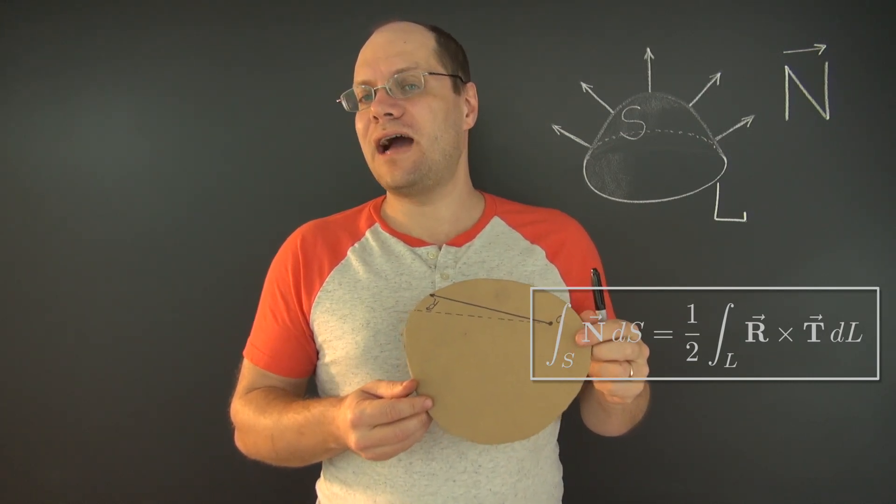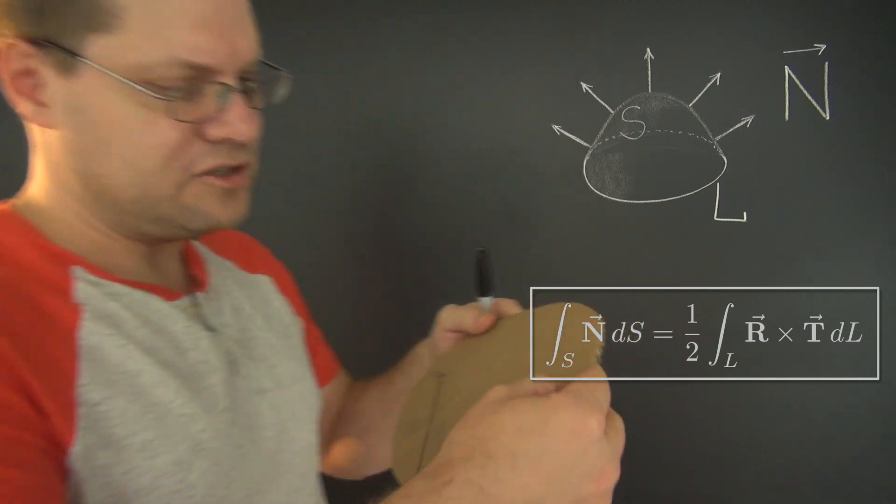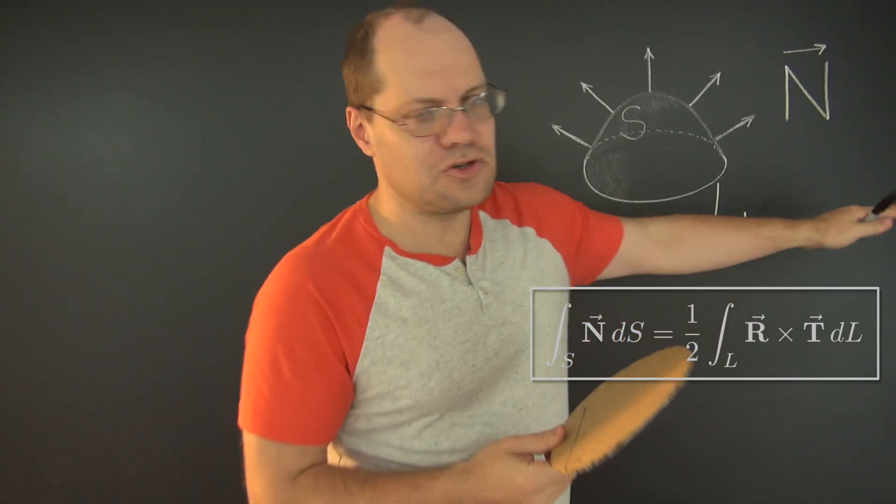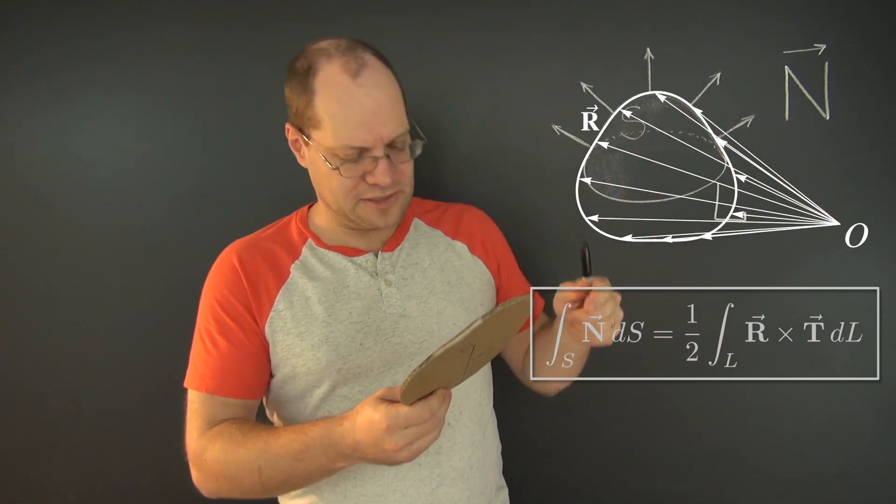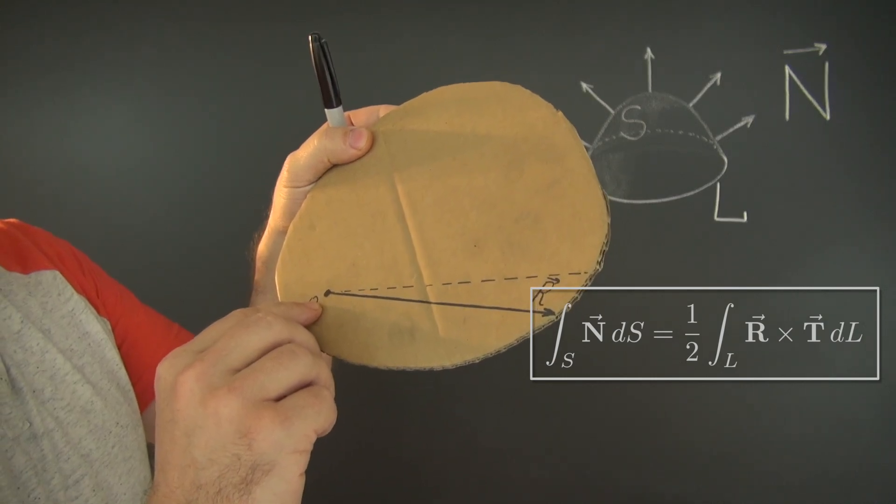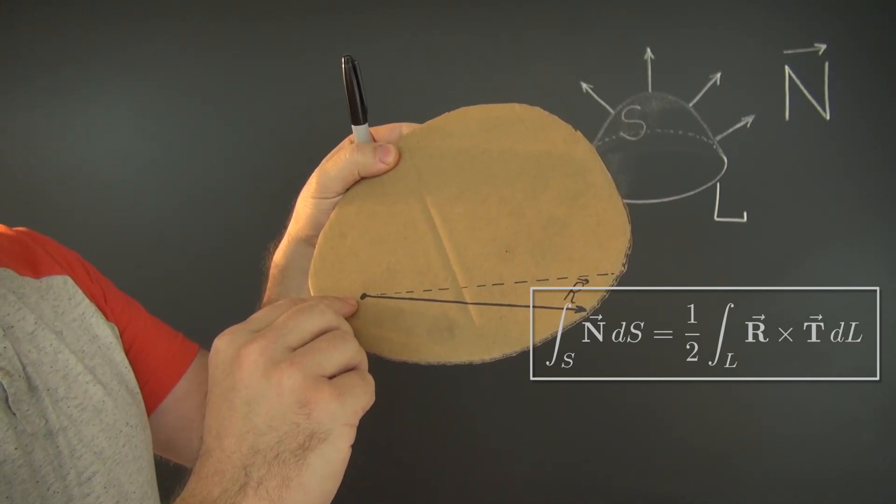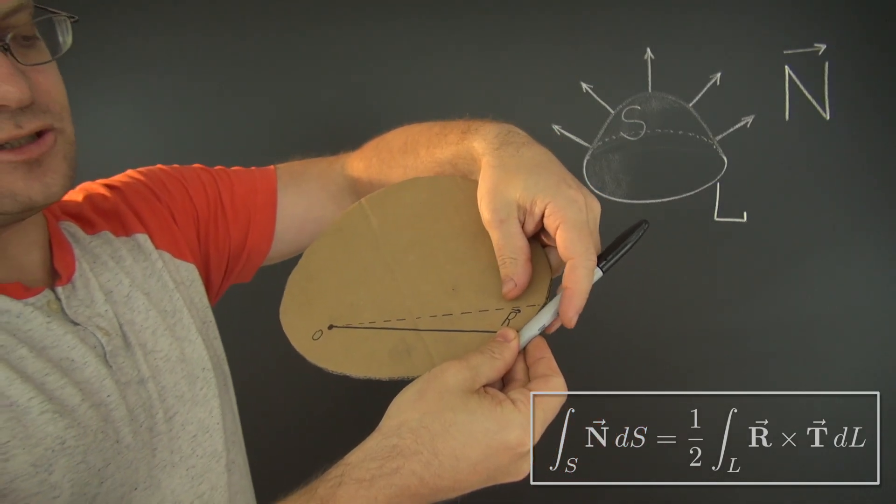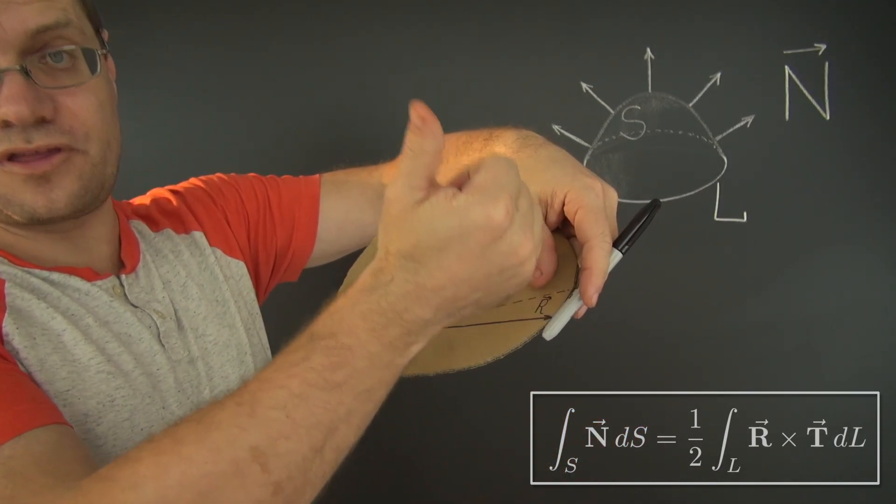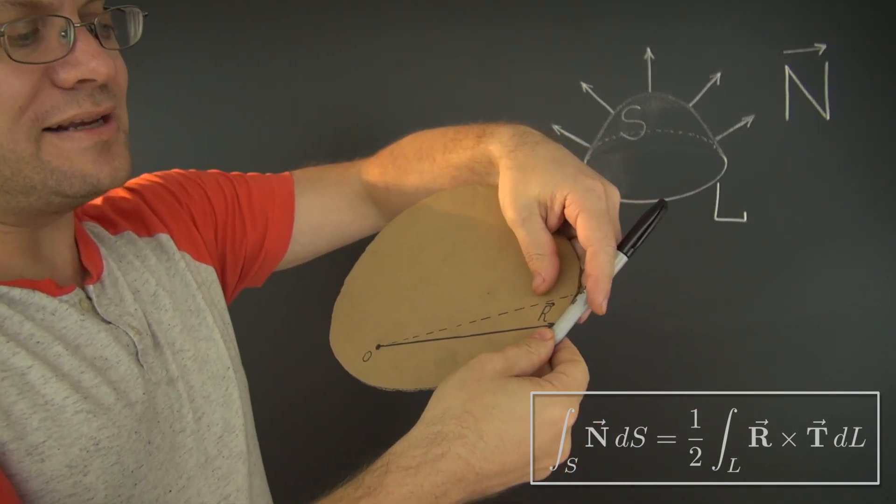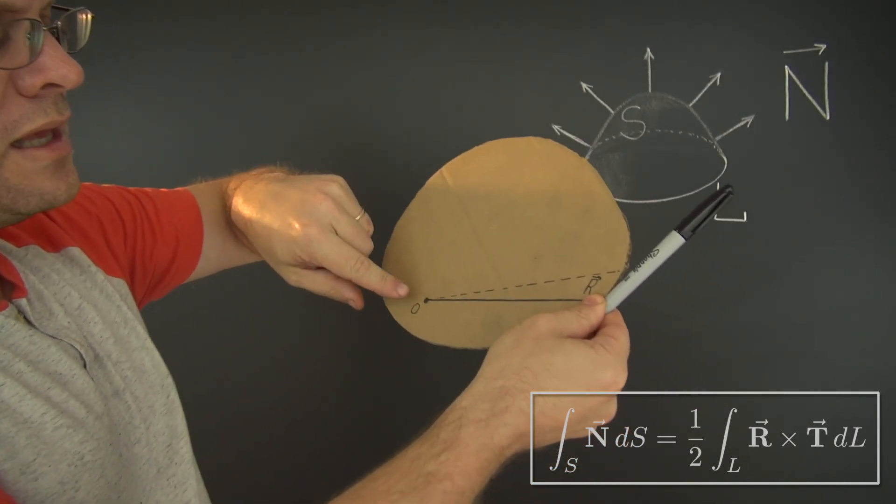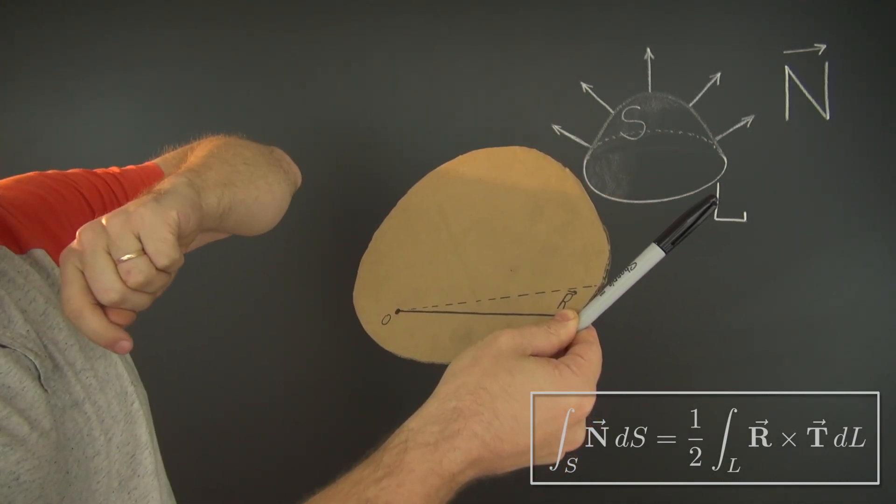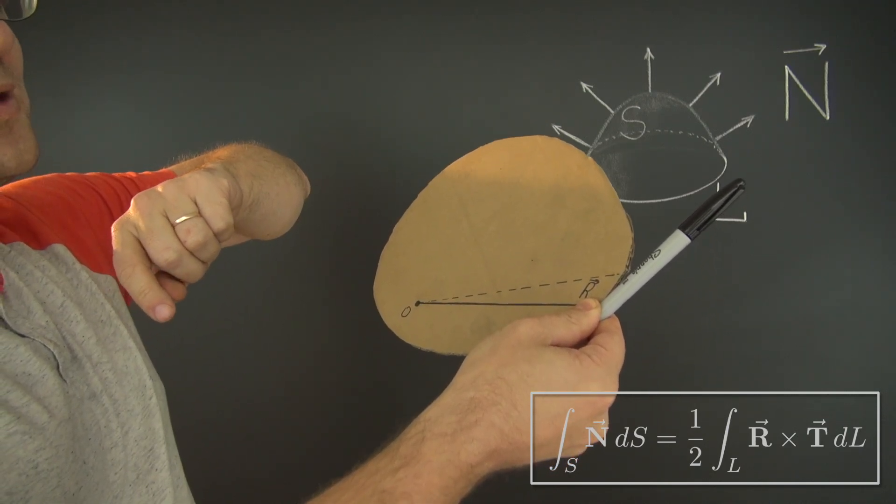Now, let's take a look at the contour integral. Here, I chose the origin for the position vector right here. Previously, I chose it to be elsewhere, but as we will discover later, the position of the origin doesn't matter. So let's assume that it's here. Now, the cross product of the position vector and the unit tangent points in the orthogonal direction, by definition, and its magnitude equals the area of this parallelogram formed by the position vector and the unit tangent.